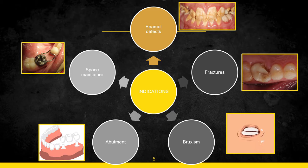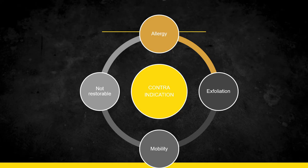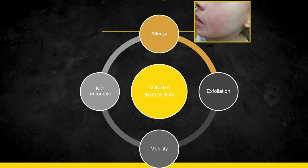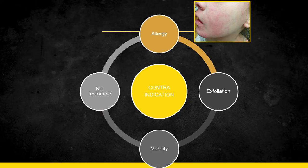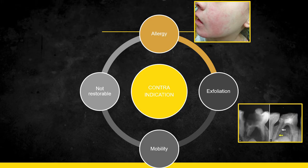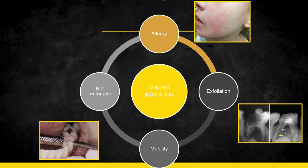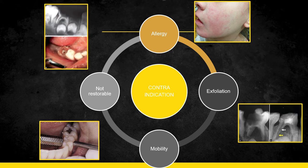Now let's look at the contraindications. First is allergy — related to the nickel present in the stainless steel crown. Patients can suffer from nickel allergy resulting in contact dermatitis, rashes, itchiness, and urticaria. A proper allergy history is a must before placement. A stainless steel crown is also contraindicated if the tooth is close to its exfoliation stage, if the patient has any tooth mobility, or if the tooth is in a condition where no restoration can be performed.